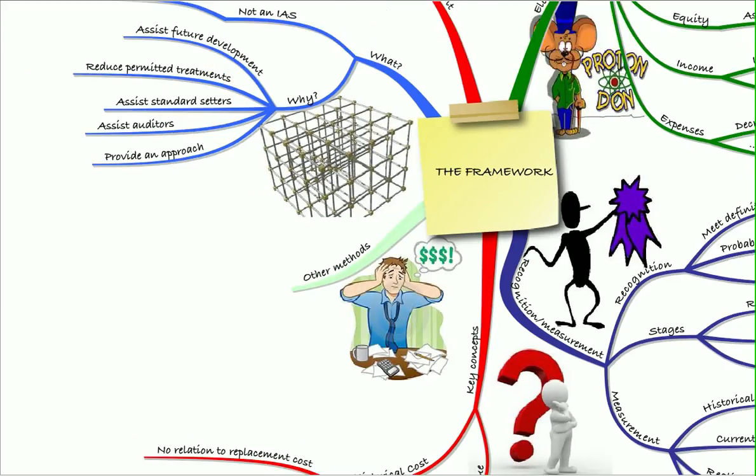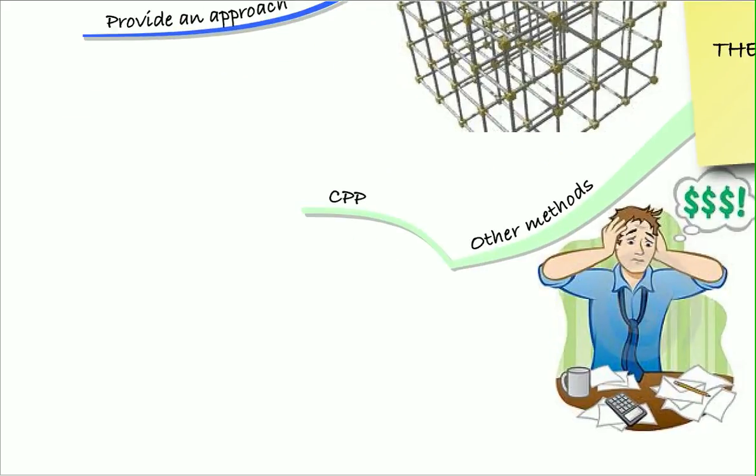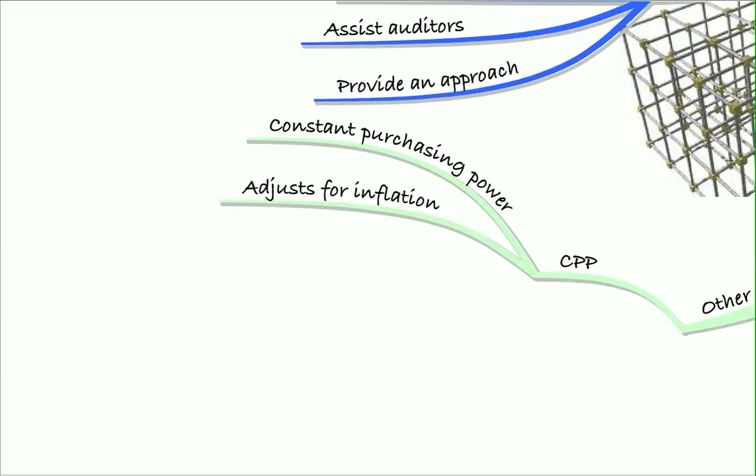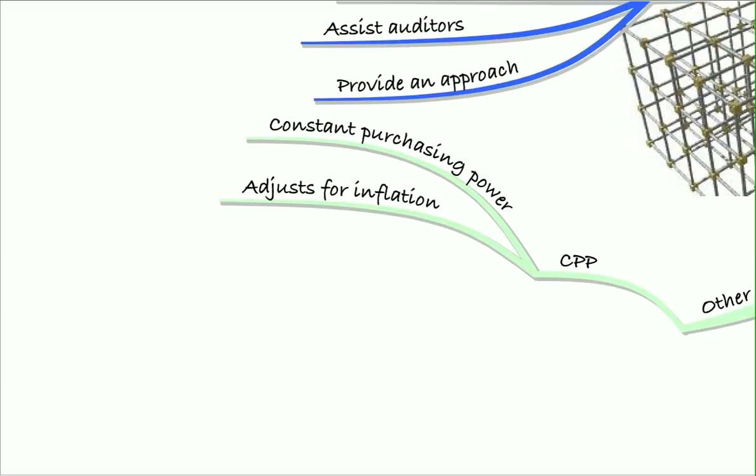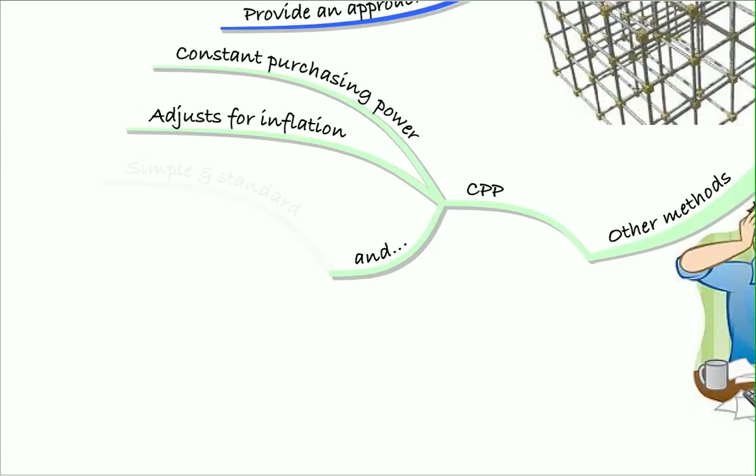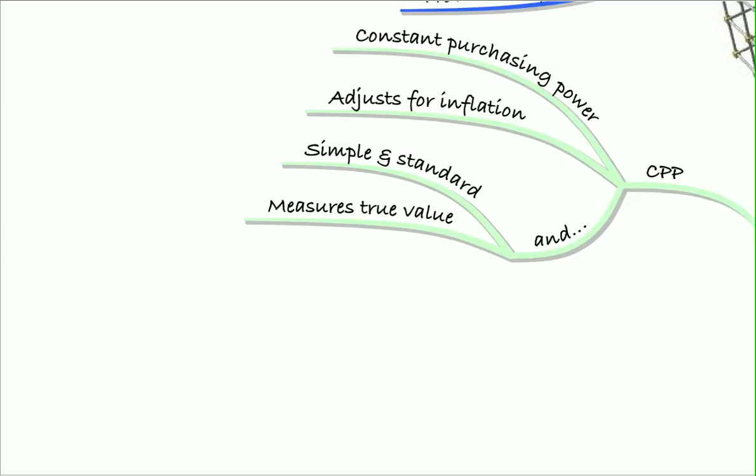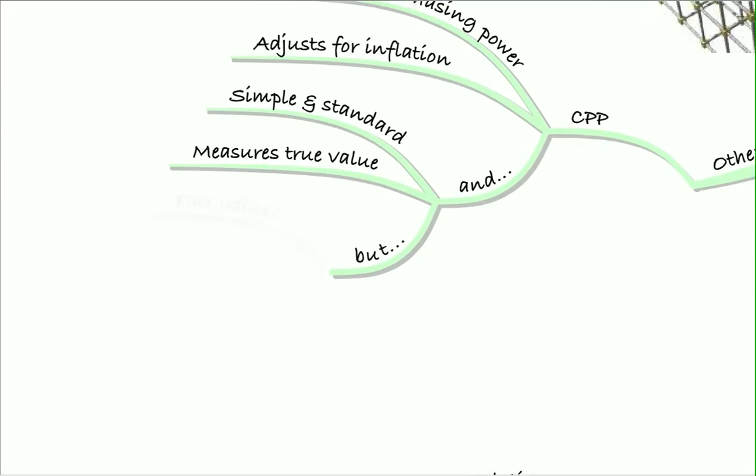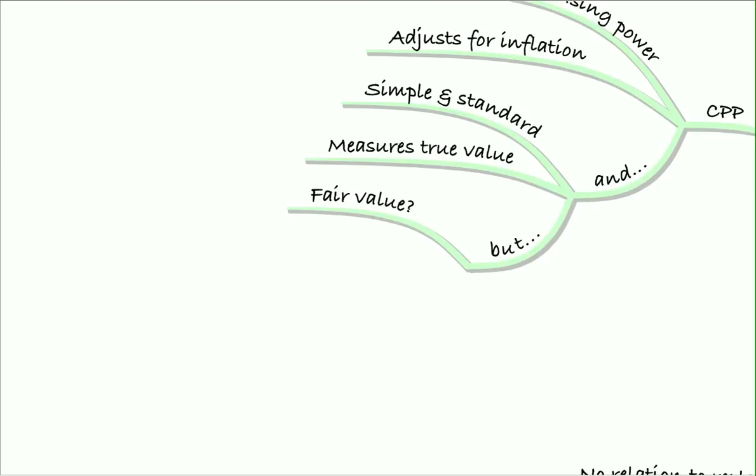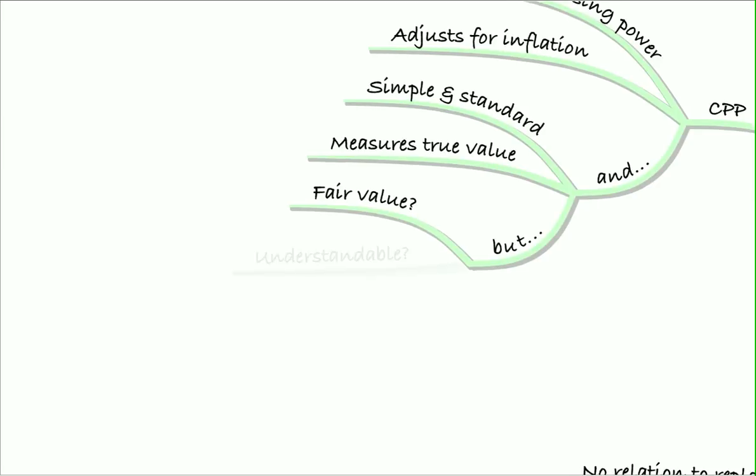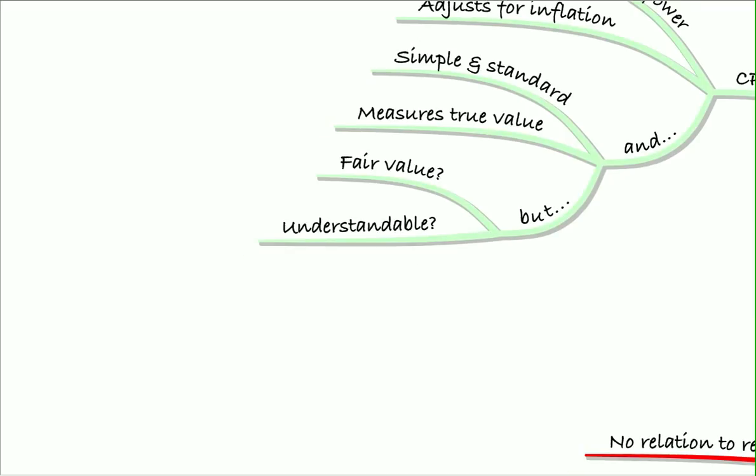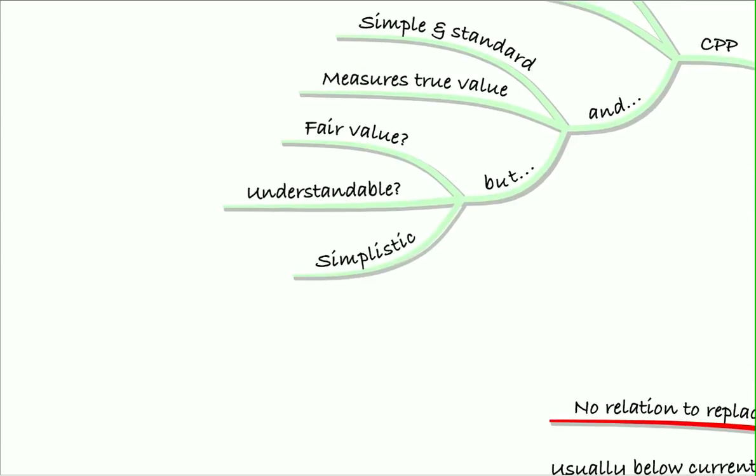When it comes to other methods that we could use we have CPP which is constant purchasing power. Under this method it adjusts for inflation and what does that mean? Well it's simple and it's standard. We adjust for inflation based on an index and it would therefore measure the true value of something. However, it wouldn't really have a link to fair value. It would just be an arbitrary movement based on inflation. Is it understandable? Well the users would have to understand the inflation concept and what you're trying to achieve. And it is a bit simplistic because we'd simply be using an index. For those reasons, this isn't used within our conceptual framework.